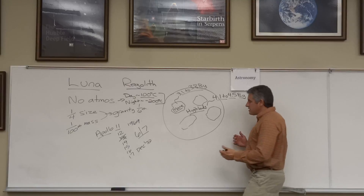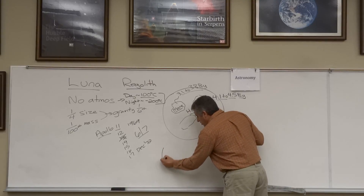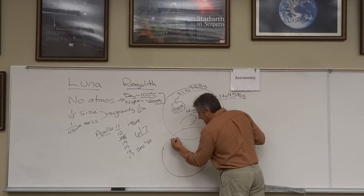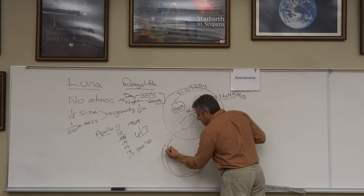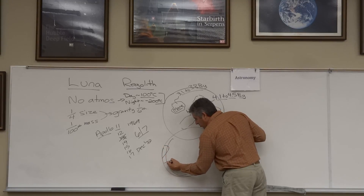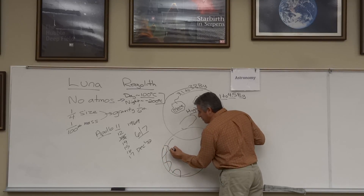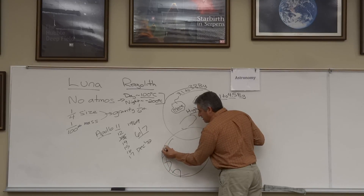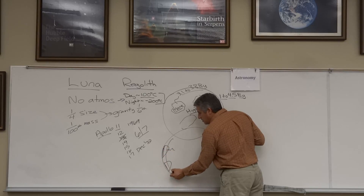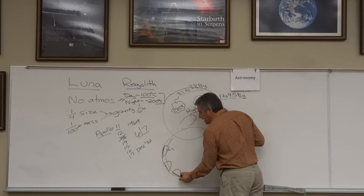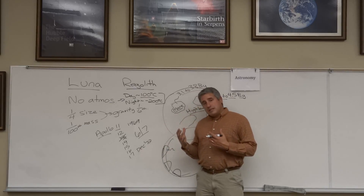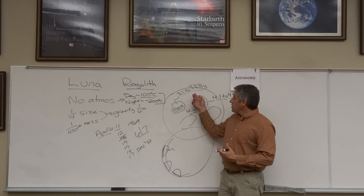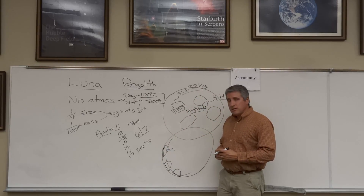The thinking is that when the early moon was hit by impactors, the crust was thin. A hole was punched in that crust, and lava welled up to form these mare, resurfacing the moon 3.1 to 3.8 billion years ago.